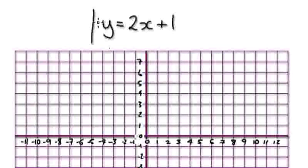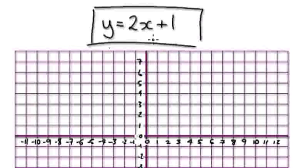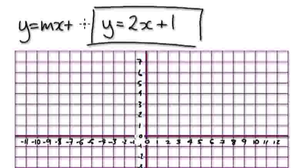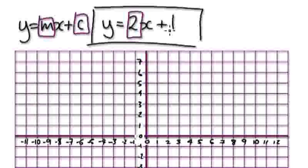So now I'm going to show you how to sketch this. Remember, it's y equals mx plus c. This here is your gradient, and this is your intercept. So the intercept would be 1, so you know it's going to pass through this point here.